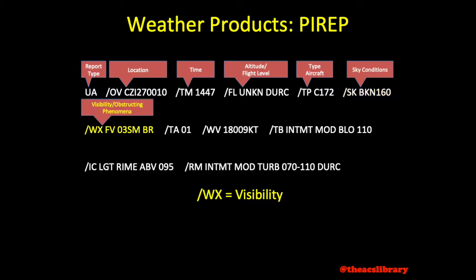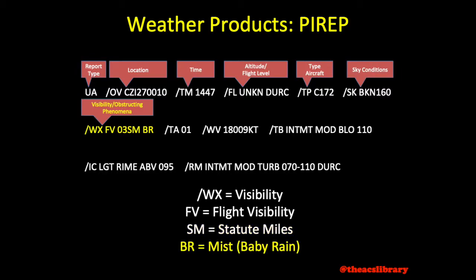Visibility is coded /WX, followed by FV for flight visibility, and then the visibility reported in statute miles. The weather condition obstructing the visibility will also be reported in this section. In this case, we have mist obstructing our visibility.